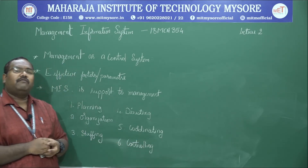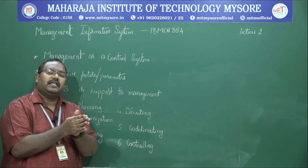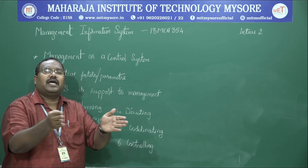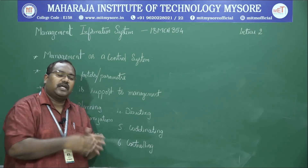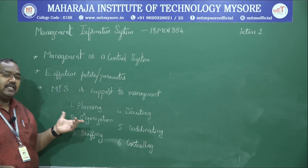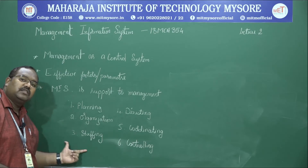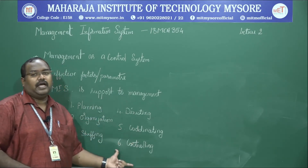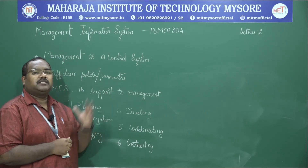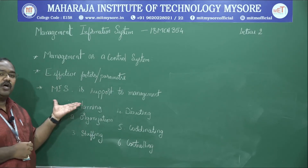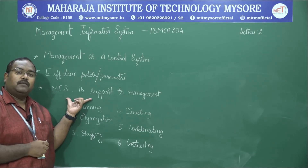Controlling: when everything is in process, it needs to be always controlled, because if controlling is not done, when deviation happens the process goes apart from the original track. MIS supports all six activities — planning, organization, staffing, directing, coordinating, and controlling. There is a diagram that represents this support. This is one of the important questions that would be asked in many exams for more than ten marks.